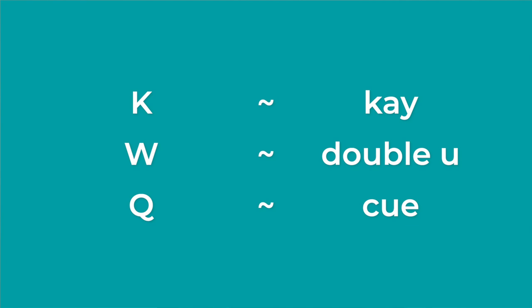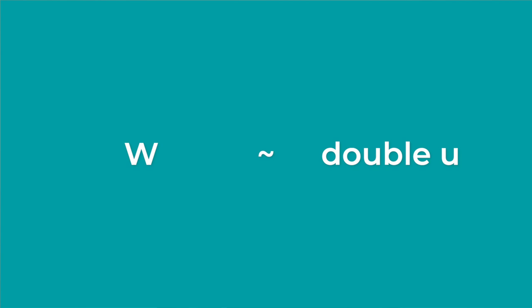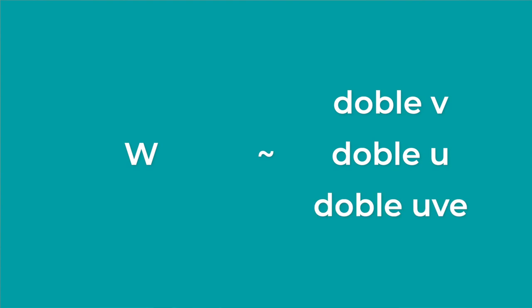Then we have K, W, and Q. Again, we simply need to replace the English vowel sounds with Spanish vowel sounds. For K, we replace the A sound with a Spanish A, so this letter becomes Ka. For W, instead of double-U we say DOBLE U. We can also say DOBLE B, DOBLE UBE, or UBE DOBLE — this varies regionally, but DOBLE U is understood across most of the Spanish-speaking world. For Q, we replace the English U sound with the Spanish U.